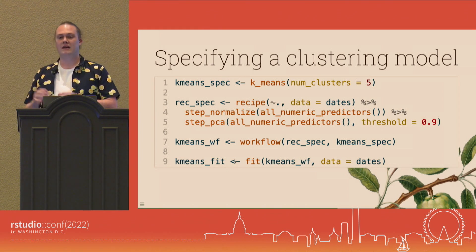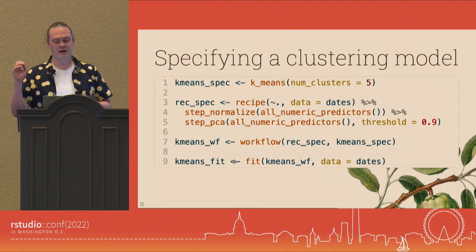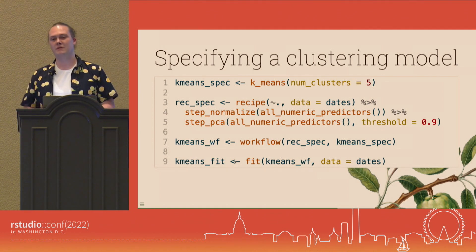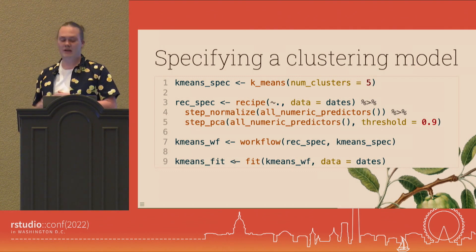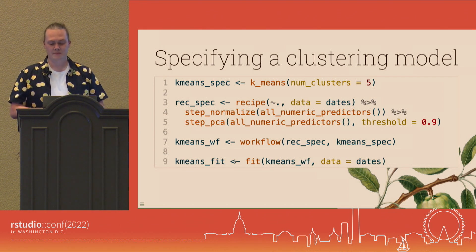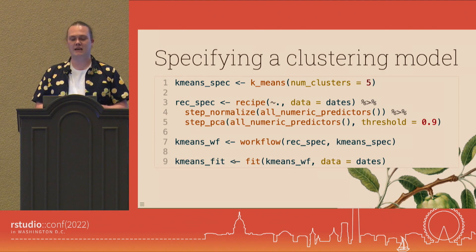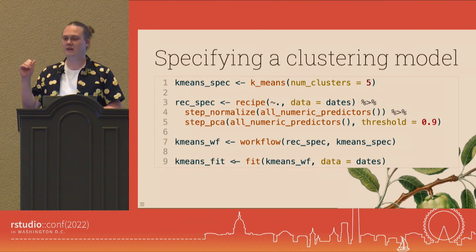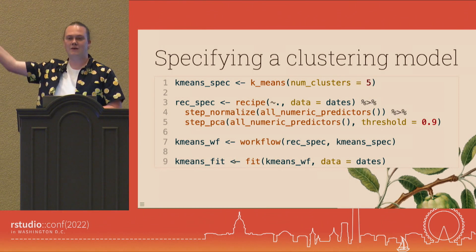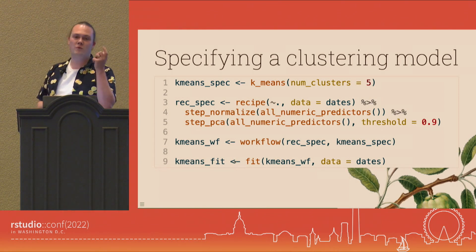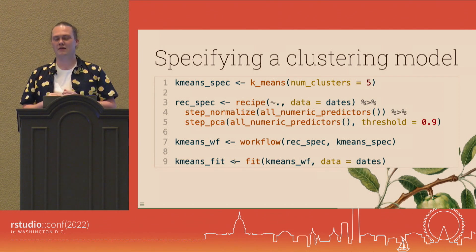With this model specification, we can now work with the rest of Tidy models. Here we are creating a specification where we normalize the data and deal with the correlations by applying some PCA, keeping the most variable principal components. We can easily put it into a workflow and fit this workflow. If you take a quick note, you'll see that this is very similar to everything else we're doing in Tidy models. The only two differences are: instead of specifying a parsnip object, we're creating our tidy cluster object, and in the recipe we're not specifying an outcome. But everything else works smoothly, so there's very little new for you to learn.